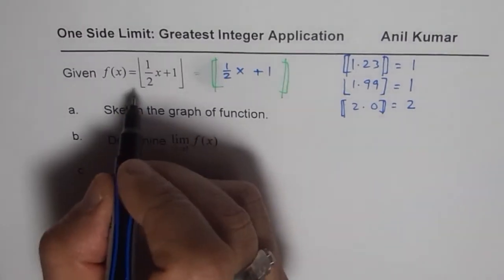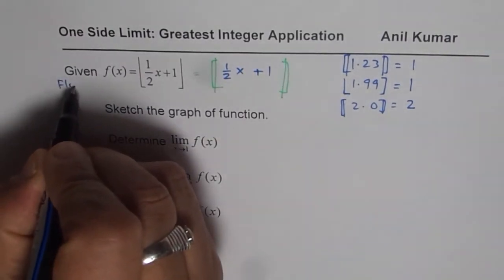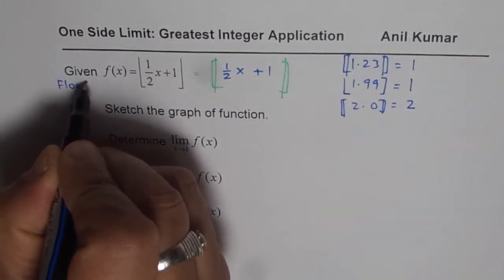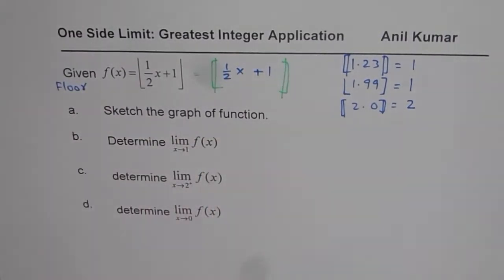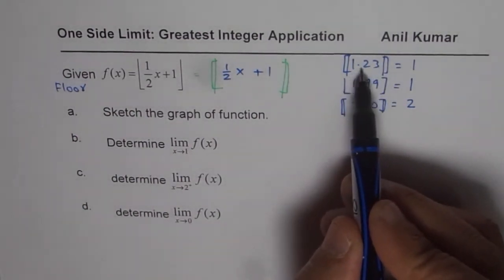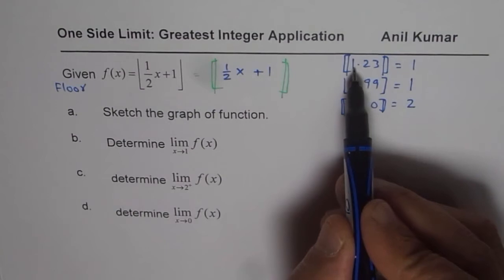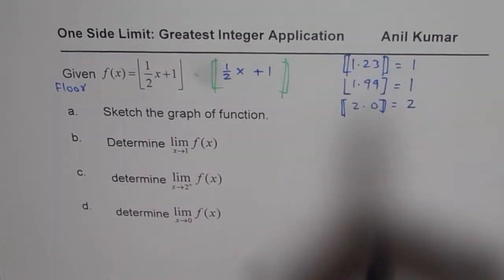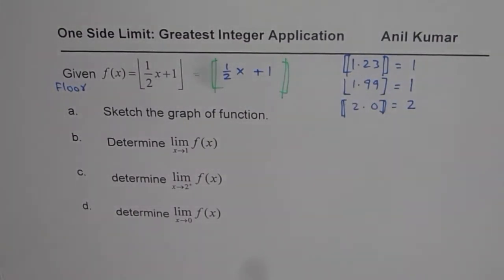This is also called the floor function. Floor means the lowermost integer value. So if the number is 1.23, the lowermost integer is 1, and that is your greatest integer in that particular function.